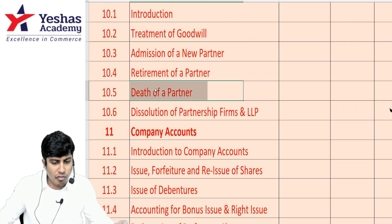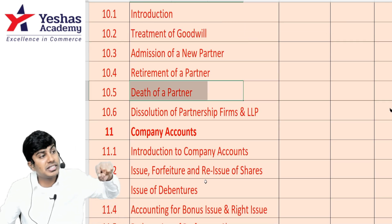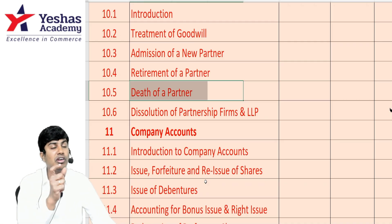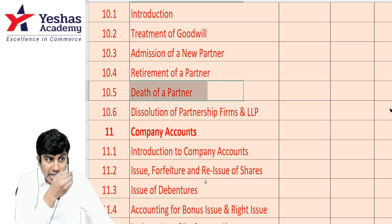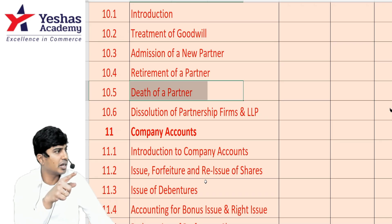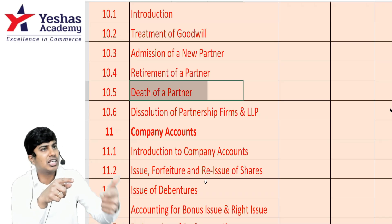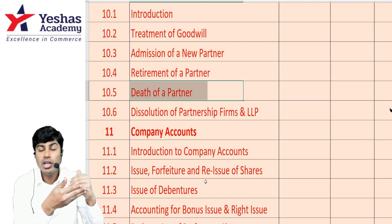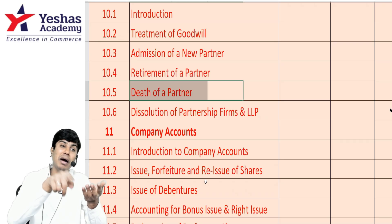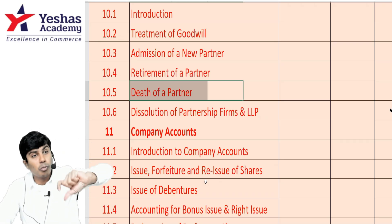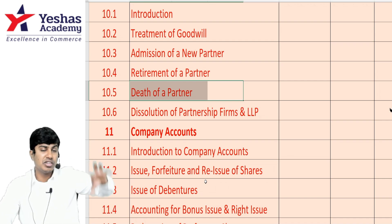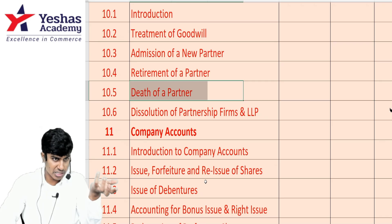For the death of a partner, remember that payments must be computed up to the date of death. If death happens in the middle of the year, profit is computed on an approximate basis and credited to the deceased partner from the P&L adjustment account. Don't forget Section 37: if no payment agreement is made, the deceased partner's dependents are eligible for payments proportionate to the capital left out, or interest at six percent — whichever is more beneficial to the deceased partner's estate.